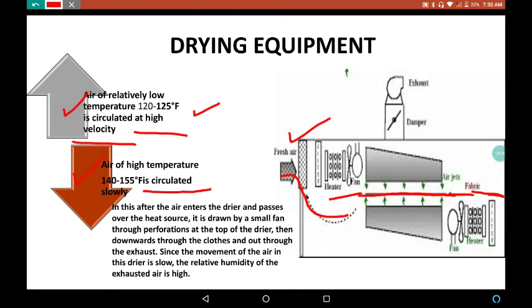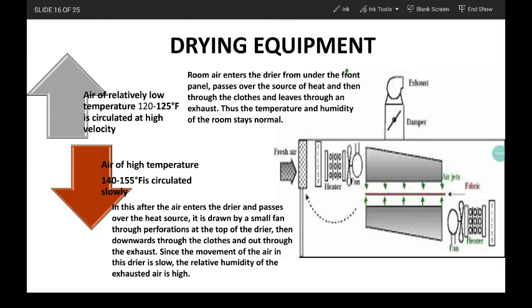When we are talking about air at high temperature that is 140 to 155 degree Fahrenheit circulated slowly, after the air enters the dryer and passes over the heat source, it is drawn by a small fan through perforations at the top of the dryer then downwards through the clothes and out through the exhaust. Since the movement of the air in this dryer is slow, the relative humidity of the exhaust air is high. Room air enters the dryer from under the front panel and passes over the sources of heat and then through the clothes.